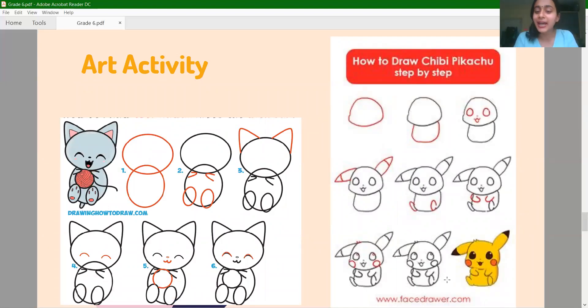And for your art activities, for today, you can make any animal. Here, there is a Pikachu drawing here. And here, there is a cat drawing here. You can make any animal. And if you want to draw something else, you are free to draw that. You just have to do some art activities.